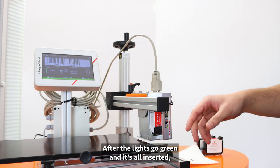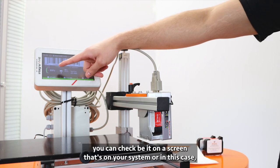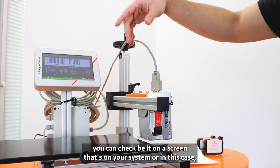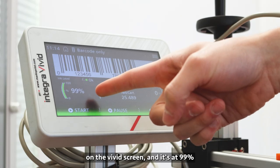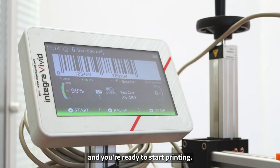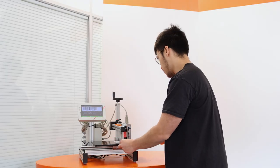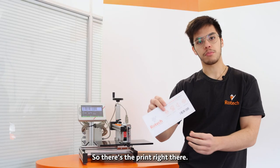After the lights go green and it's all inserted, you can check on a screen that's on your system or in this case on the Vivid screen. It's at 99 percent and you're ready to start printing. There's the print right there.